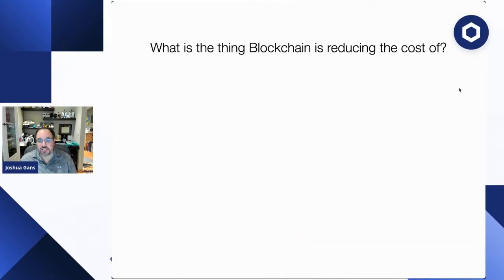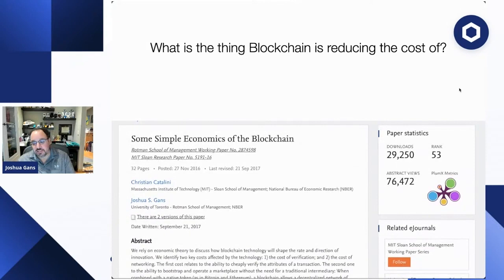The question we'd ask with respect to the blockchain is: what's it reducing the cost of? The answer, which myself and Christian Catalini — a professor at MIT and now chief economist of the Diem Association — arrived at, is that it's reducing the cost of verification.